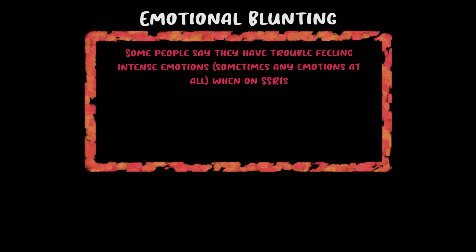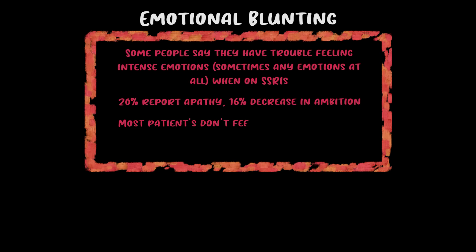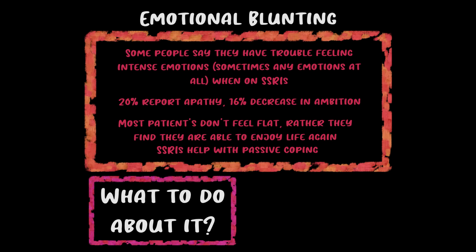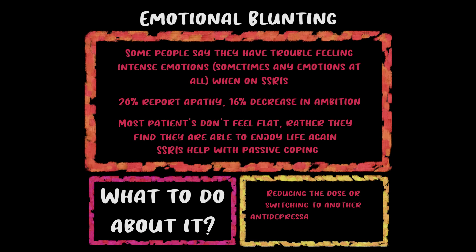The next persistent early side effect is emotional blunting — conceptually the far end of the spectrum of the beneficial effect of SSRIs. About 20% of patients report apathy and 16% describe a loss of ambition. Most patients don't feel completely flat; rather, compared to severe depression, they find they can enjoy life again. The leading theory is SSRIs help with passive coping by tolerating stress sources — flattening negative emotions, but sometimes positive emotions too. This effect is dose-dependent and reversible; options include reducing the dose, switching SSRIs, or switching to bupropion.